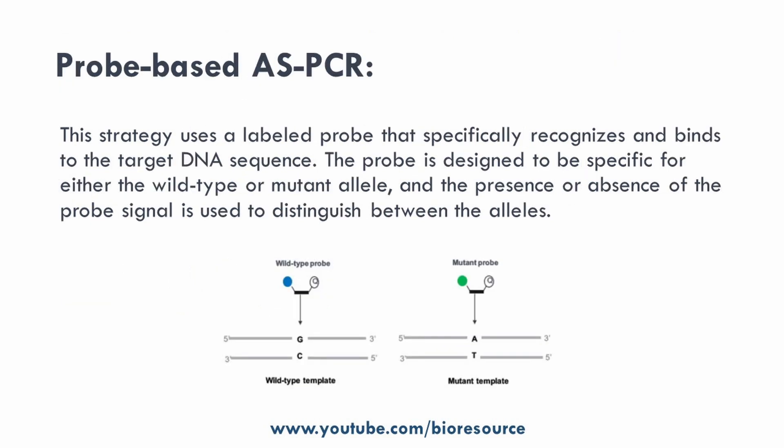The fourth strategy is probe-based allele specific PCR. In this approach, the probe targets the mutated region rather than the primers. There are two probes — a wild type probe and a mutant probe. The primers can be outside this region. If there is a mutation, the wild type probe will not bind to the mutant sequence and vice versa. If a specific mutation is present, the corresponding probe will bind. Two different fluorophores can be used in the probes and genotyping can be done accordingly.